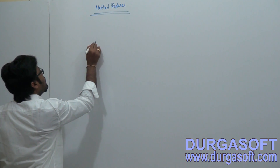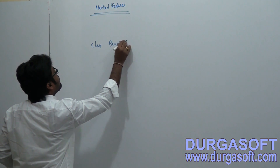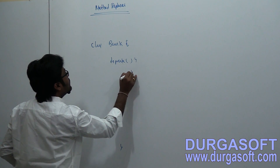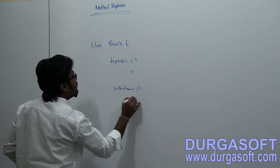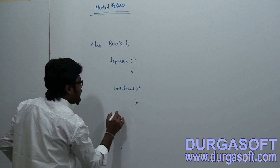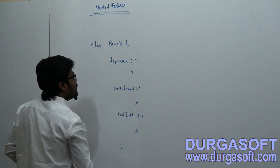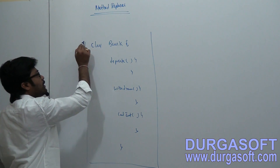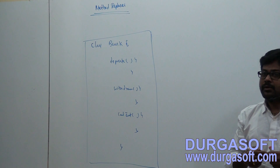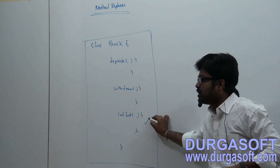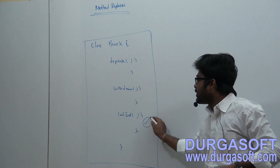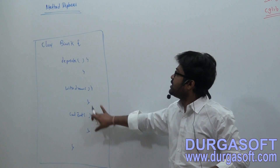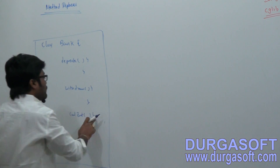If you have any class with many methods — like a bank class with deposit, withdraw, and calculate interest methods — and this class is already deployed and users are working on it, if you want to replace one method without affecting your class, without extending or editing it, by using the method replacer concept you can implement a replacement for your existing methods.